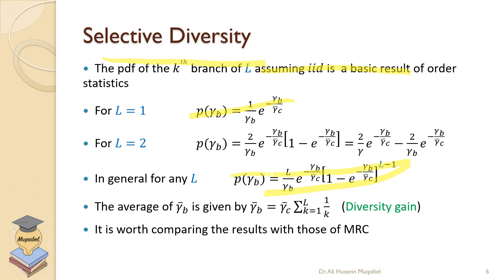This is called the diversity gain. The expression for selection diversity — the average of gamma_b given by the harmonic sum formula — is just stated in a different way here. It is worth comparing these results with those of maximum ratio combining, which we already derived.